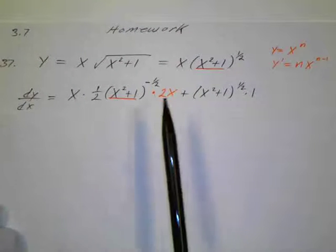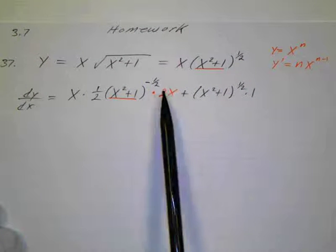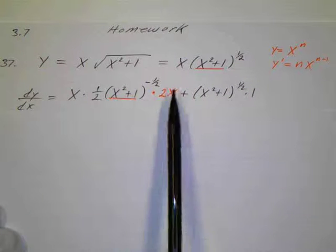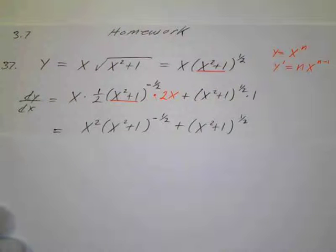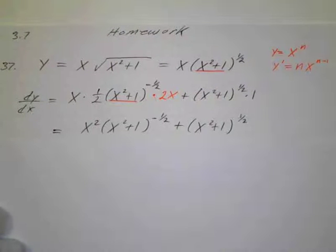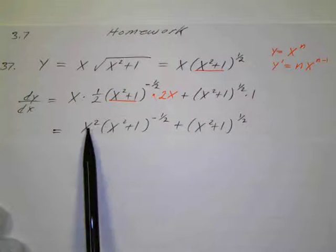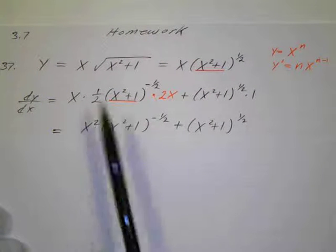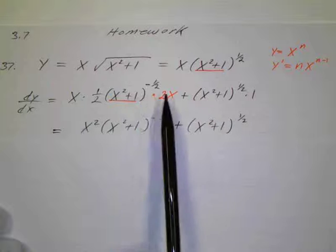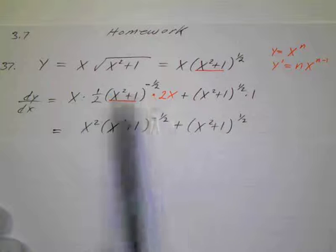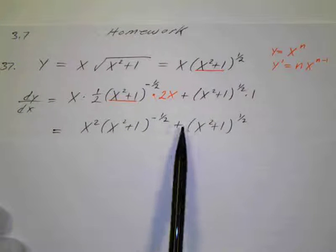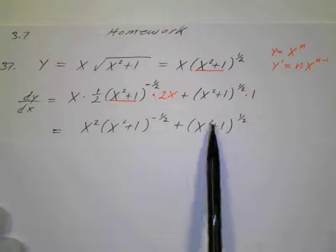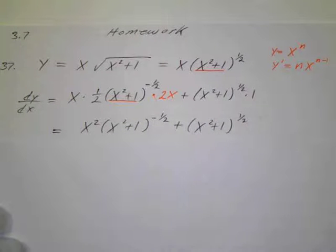We can cancel the 2 — 2 over 2 is 1 — and I can put the x squared, x times x, in front. This was the way the answer was in the book: x squared, because the 2 is canceled, put the x in front. x squared plus 1 to the negative 1 half, plus x squared plus 1 to the 1 half.